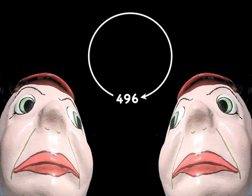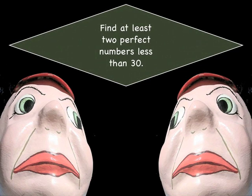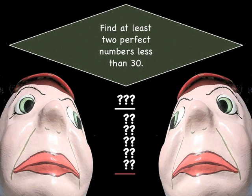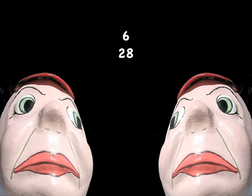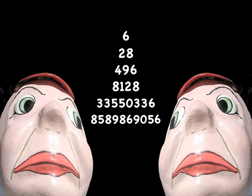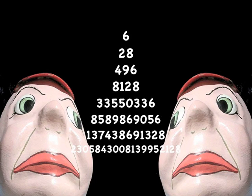I want you to find at least two of these perfect numbers less than 30. Stop the video now and start searching. A perfect number is whenever you add together all its proper divisors and the result equals the number itself. The perfect numbers start with 6 and 28.